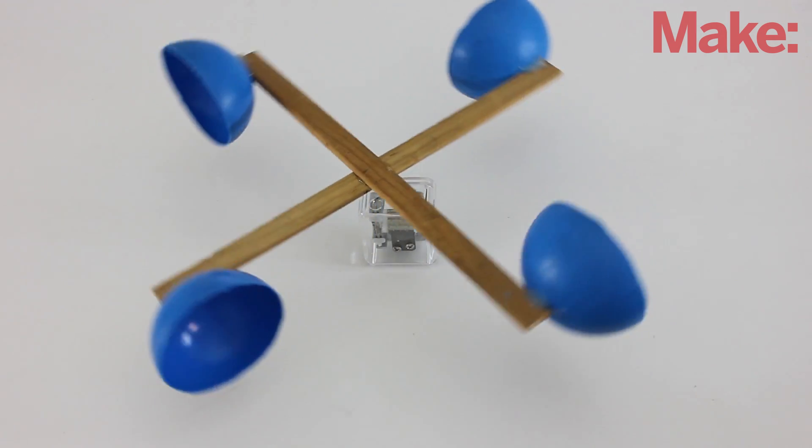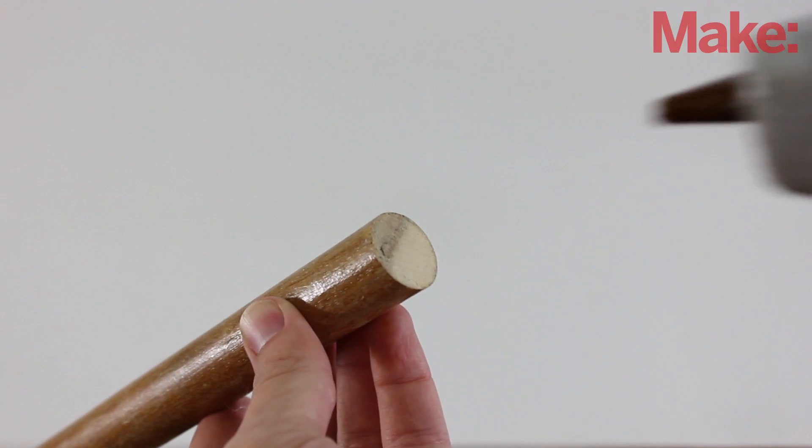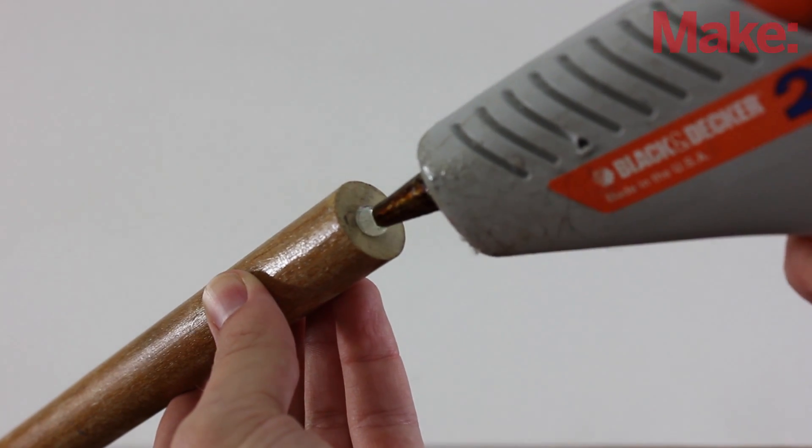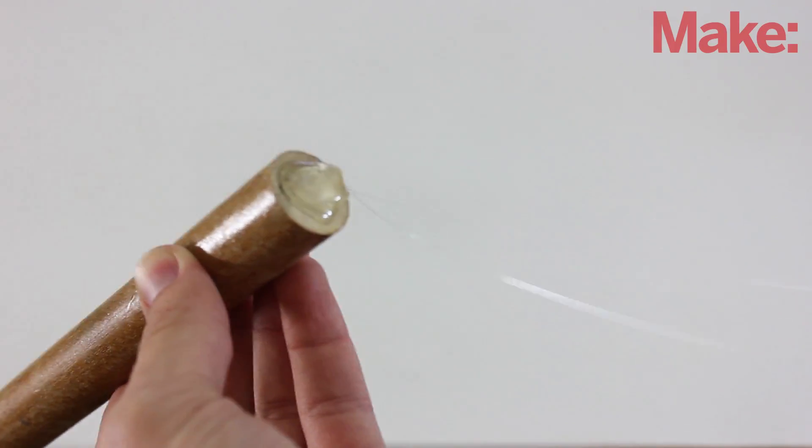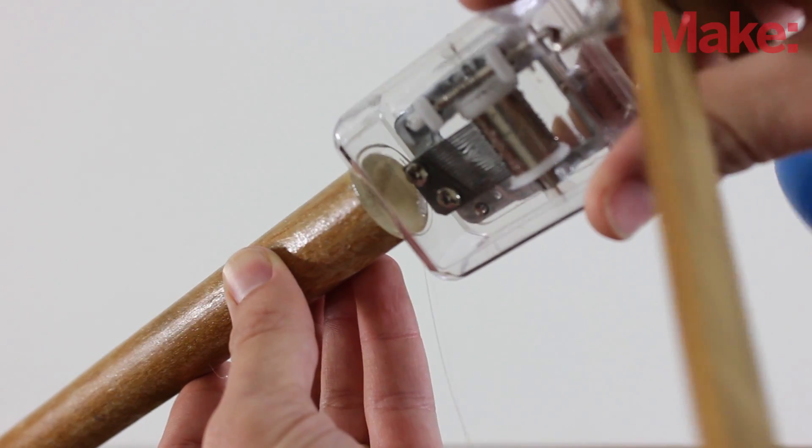This should turn easily and play music. To mount the music box, I attached it to the end of a wooden pole. Just apply some hot glue to the end of the pole and stick on the music box.